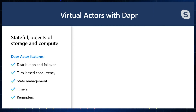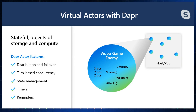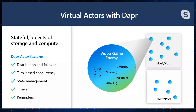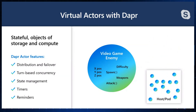I don't quite have time to show an actor demo, but DAPR also has a first-class actors building block. If you're familiar with actors from Service Fabric, they allow you to hold state and compute together in a single entity. You can create millions of these in your environment — they are turn-based and have state associated with them. If they fail, DAPR takes care of re-hosting them. They're very similar to Service Fabric Reliable Actors and particularly powerful for IoT systems with virtual devices or gaming systems.